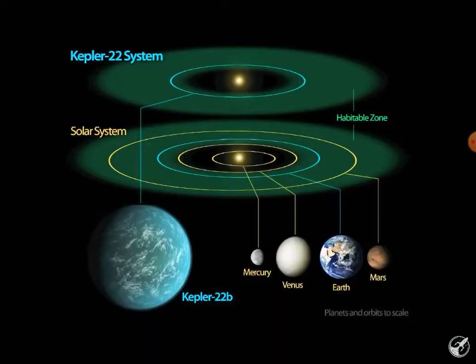Kepler-22b has a radius of 2.4 times that of the Earth, putting this planet in a category commonly called a super-Earth. It takes 290 days to travel once around its sun, which is slightly smaller and cooler than ours.